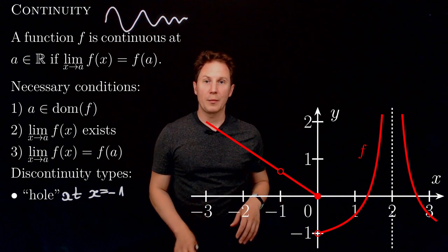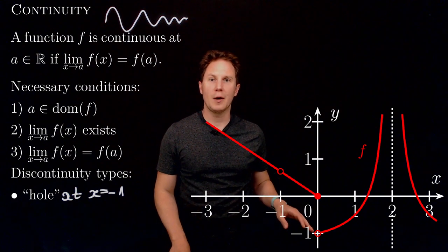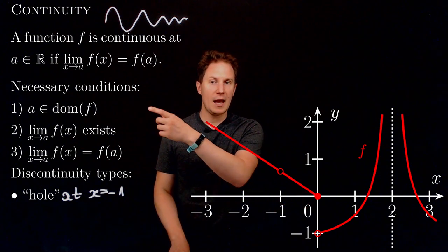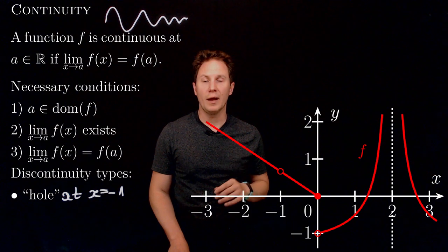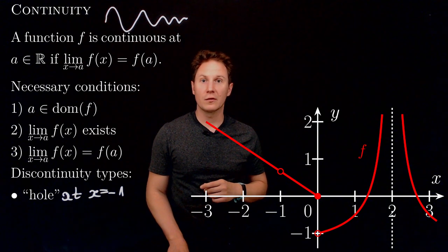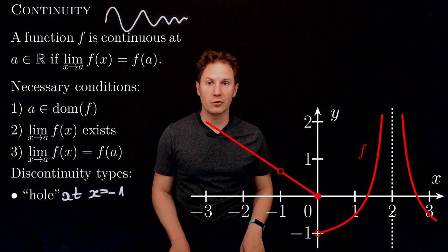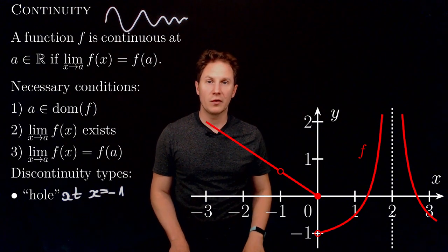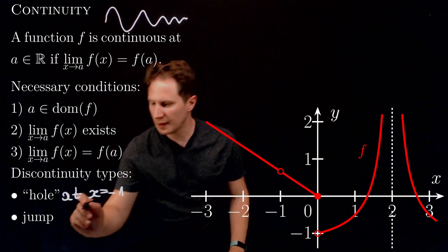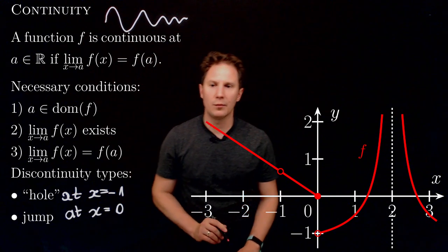At x equals zero something else is happening — the function's graph makes a sudden discrete jump. Even though the function is defined there, so zero is in the domain and the first condition is met, the limit as x approaches zero does not exist, so the second condition is not met, because the one-sided limits do not match there. Because of the sudden jump, we call this type of discontinuity a jump discontinuity.